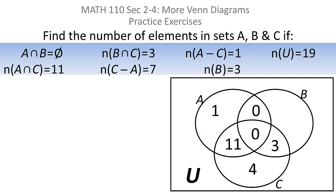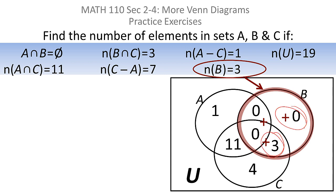Then we just keep moving along. They told us that there are three elements in the entire set B, but you already had three here, so there couldn't be any more anywhere else. So every other area has to be zero. Every other sub-region of set B has to be zero because if there are only three and you have three here, everything else has to be zero.